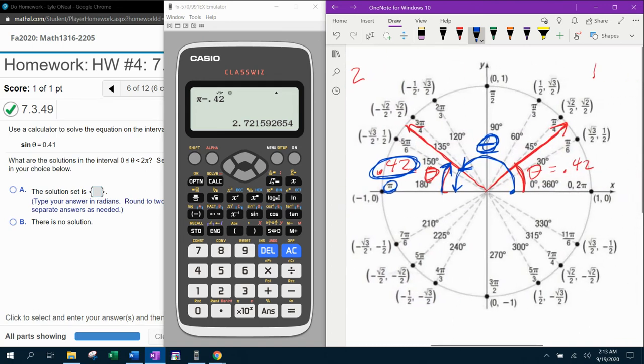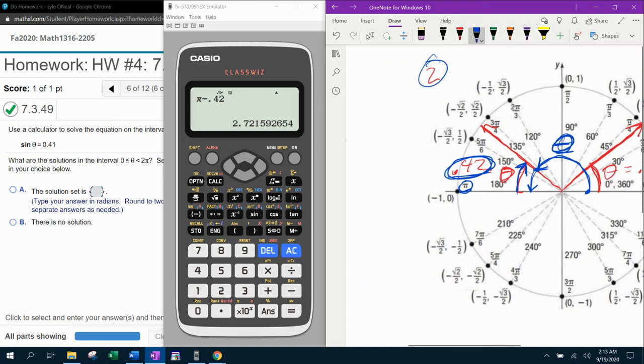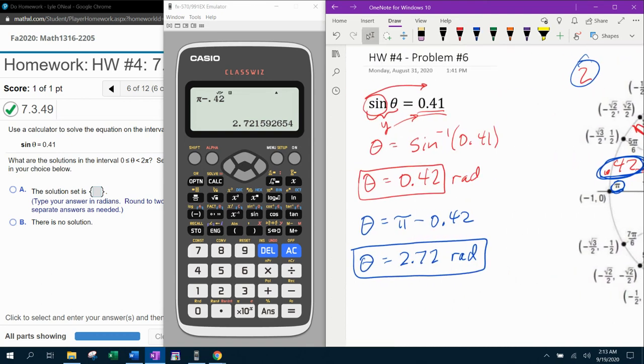And notice there are going to be only two solutions, because we're restricted from zero to two pi. And the only quadrants that have positive y values are quadrants one and two. So those are our two values.